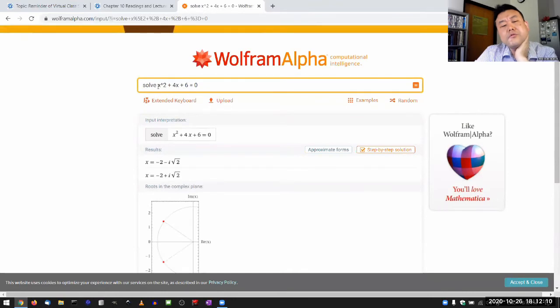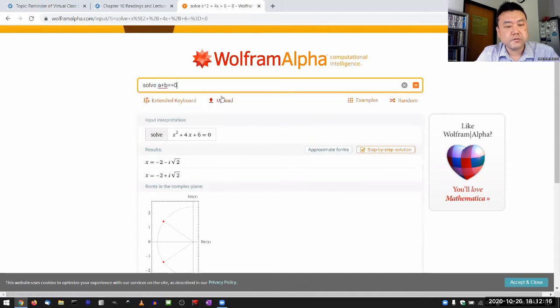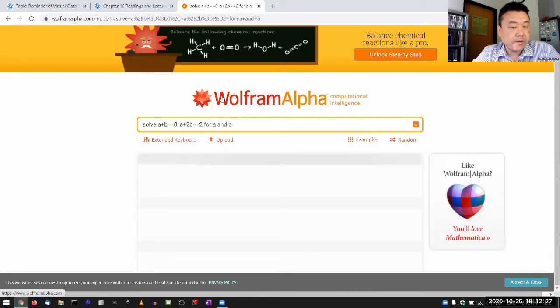Let me see if you can do a system of equations. A plus B is equal to 0, A plus 2B is equal to 2.